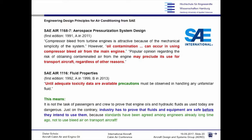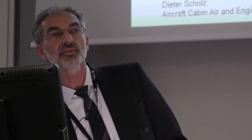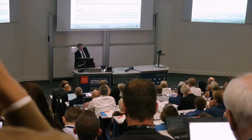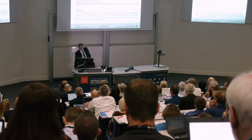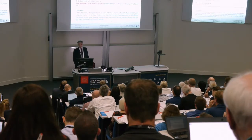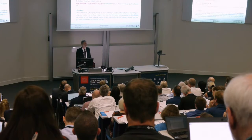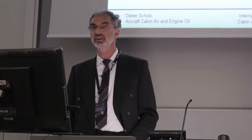Another document states that oil contamination can occur when using compressor bleed air from the main engines, and it may preclude its use for transport aircraft — stated already in 1991, and the sentence remained in the 2011 revision. Yet another document says that until adequate toxicity data are available, precautions must be met: the industry has to prove that fluids and equipment are safe before deploying them, not build first and see if someone is harmed.